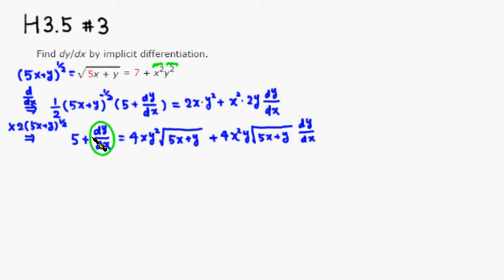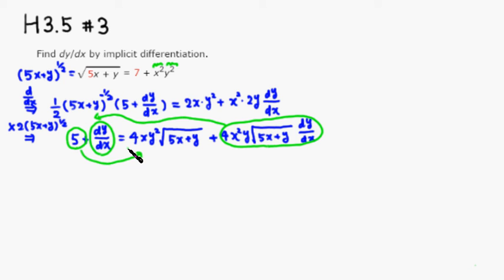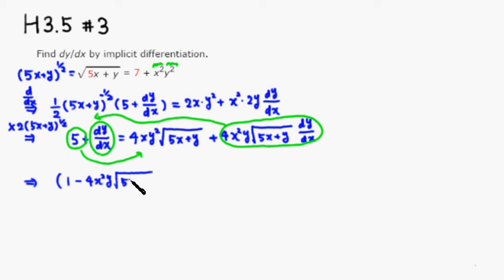Now I'll collect all dy/dx terms. The dy/dx from the left stays, and I move the 4x²y√(5x+y) · dy/dx term to the left side. Factoring out dy/dx gives: dy/dx times (1 minus 4x²y√(5x+y)).